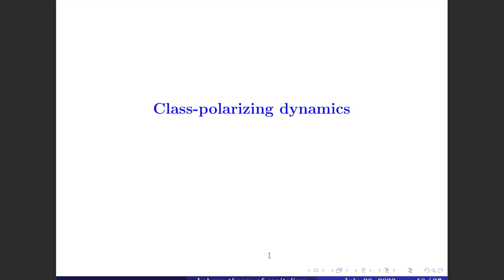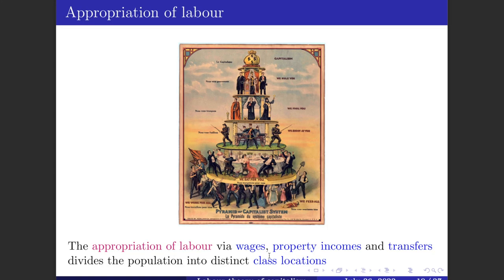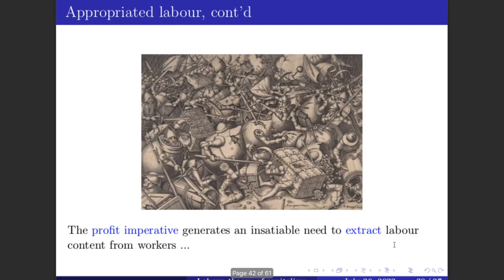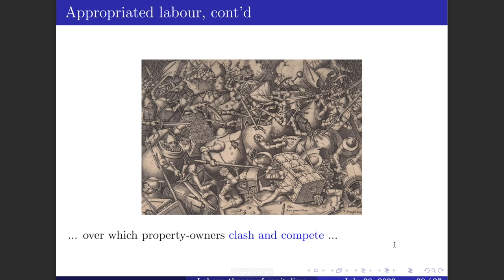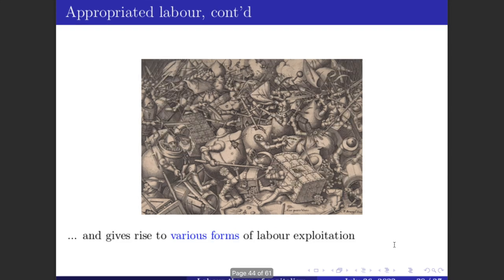Finally, let's look at how this leads to class polarization. Incomes lead to the appropriation of labor via wages or any other income — such as property incomes and transfers — and this basic fact divides the population into distinct class locations. The profit imperative to receive returns on investments generates an insatiable need to extract labor content from workers, and it is this labor content that property owners are clashing and competing over. This also gives rise to various forms of labor exploitation — what Marx called primary and secondary forms of exploitation.